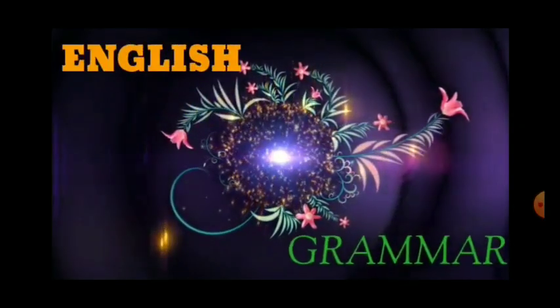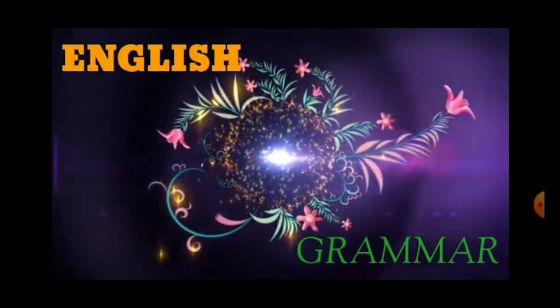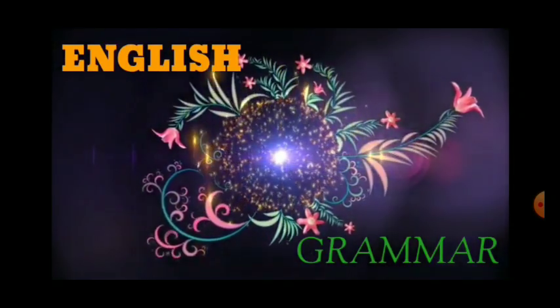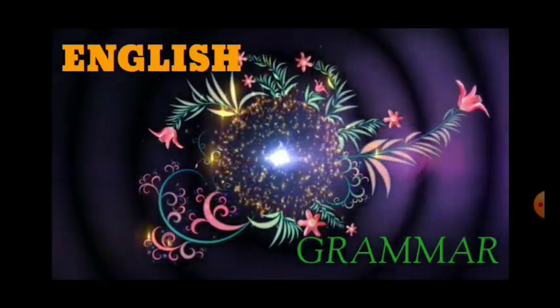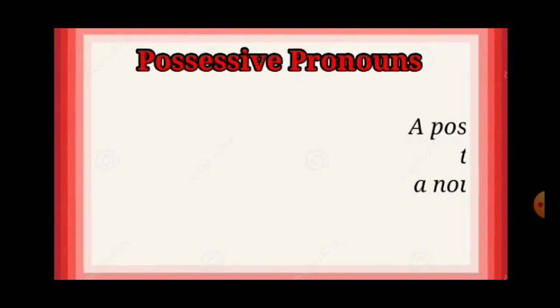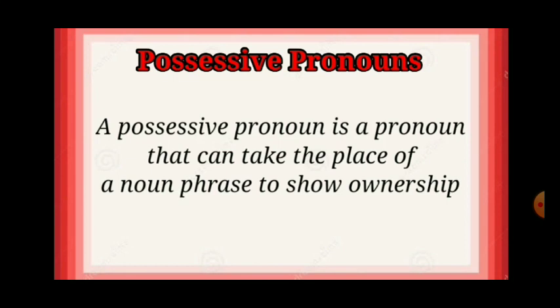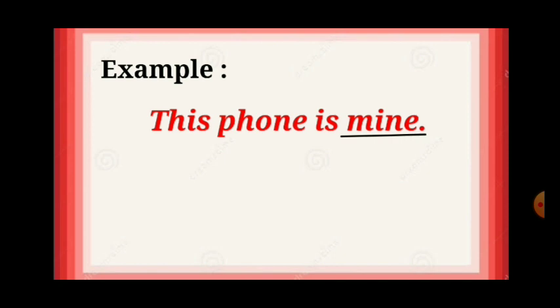Good morning, students. In English grammar today, we are going to learn the difference between possessive pronouns and possessive adjectives. A possessive pronoun is a pronoun that can take the place of a noun to show ownership. For example, 'This phone is mine.' In this sentence, 'mine' is a possessive pronoun because it takes the place of a noun.